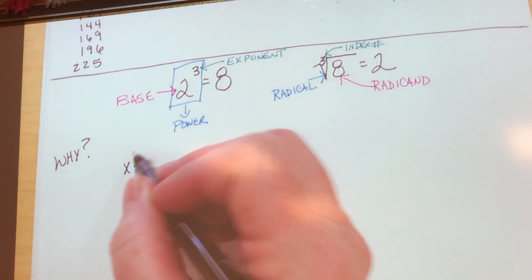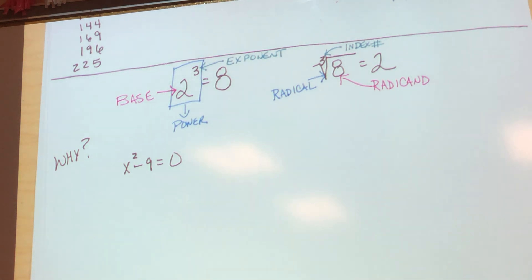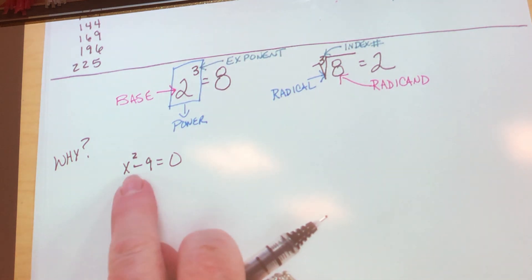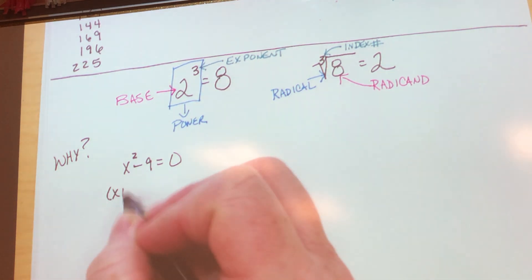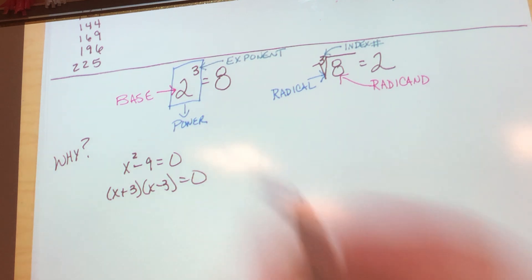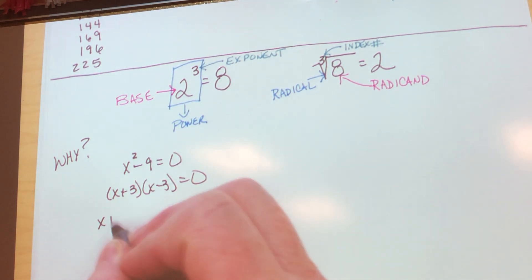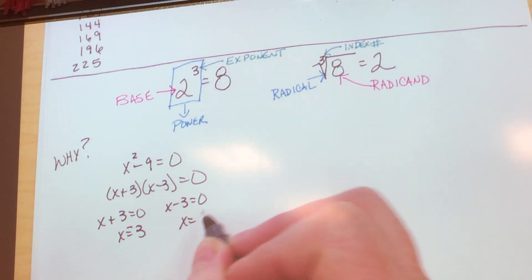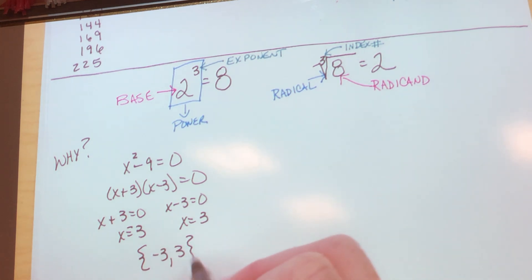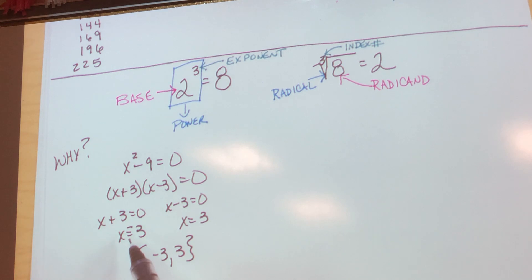What if you've got a problem like x squared minus 9 equals 0? We know how to solve this — it's a difference of two perfect squares. Much to some of y'all's amazement, that does not factor into (x minus 3) quantity squared. It factors into conjugates: (x minus 3) and (x plus 3). We set each factor equal to zero and solve for x. X is negative 3 and x is positive 3.